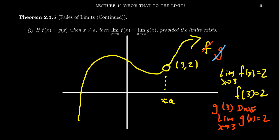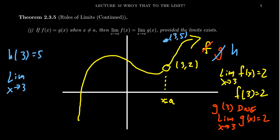As a third possibility, let's say we have some other function h, defined such that h has this point three comma five. In this situation h of three equals five, but the limit as x approaches three of h of x is still going to be two. All three of these functions — f, g, and h — are the exact same function except at x equals three. Because the functions agree around x equals three, when it comes to computing the limit you don't actually care what happens at three, you care what happens around three. Therefore, the limit as you approach three will be the same.